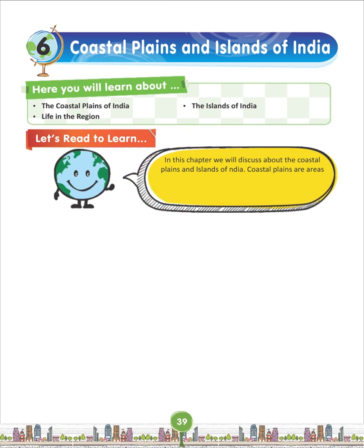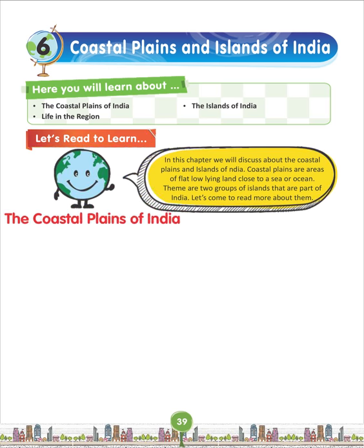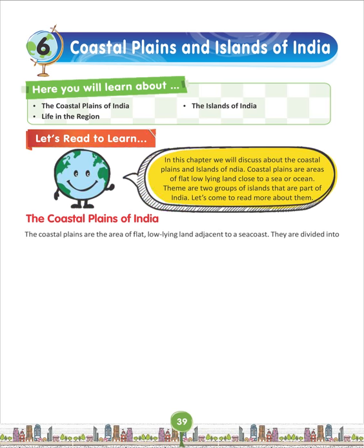Coastal plains are areas of flat, low-lying land close to the sea or ocean. There are two groups of islands that are part of India. The coastal plains are divided into two parts: namely the eastern coastal plains and the western coastal plains.